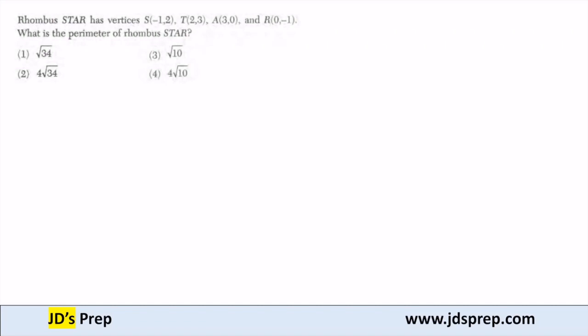What we know about a rhombus is that, similar to a square, all of the sides are the same length. So all sides are the same length, which means if we can find the length of one side, then to find the perimeter, we just add up all the sides.